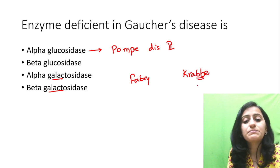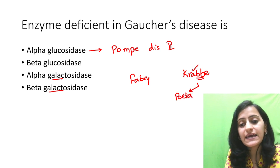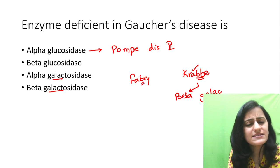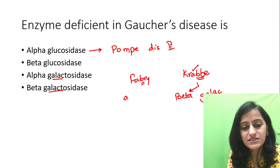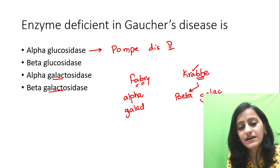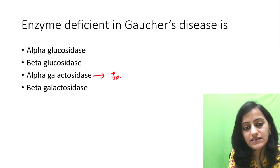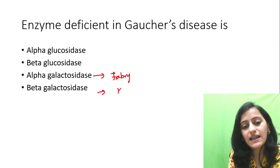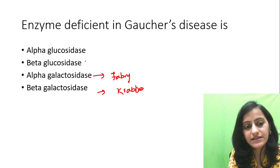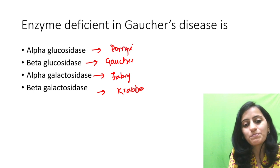Krabbe's has double B in its spelling — so it is double B, it is beta, and A's that is beta-galactosidase. Fabry's has only one B, so it is not beta. So it is alpha, and A — that is alpha-galactosidase. Alpha-galactosidase is deficient in Fabry's; beta-galactosidase is deficient in Krabbe's; beta-glucosidase is Gaucher's; and alpha-glucosidase is Pompe's disease.